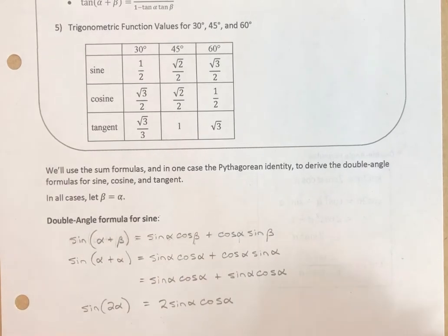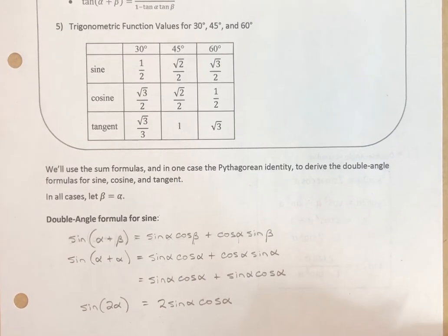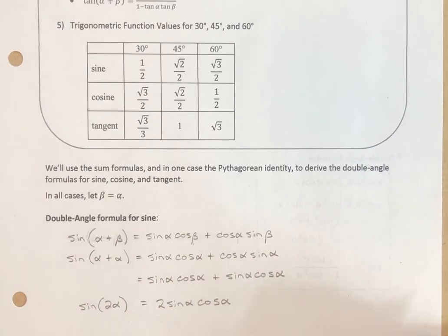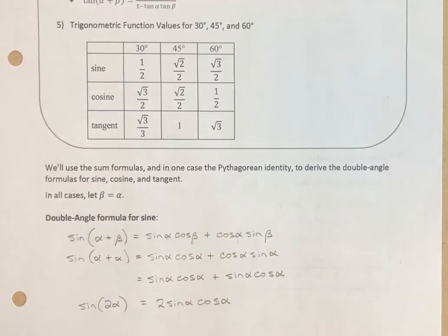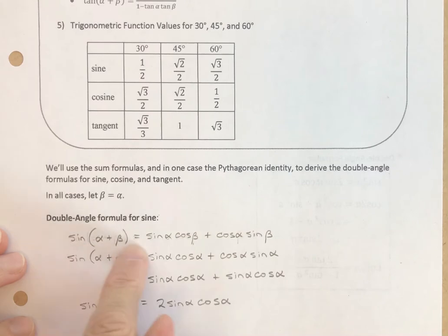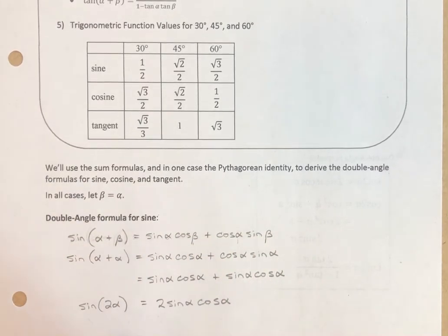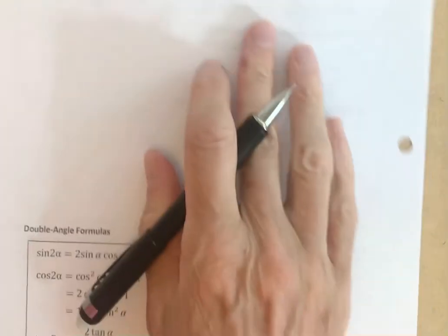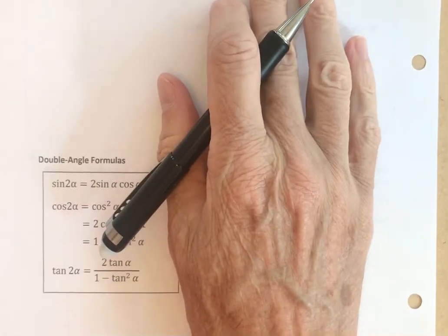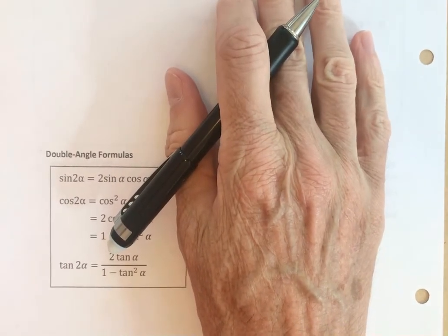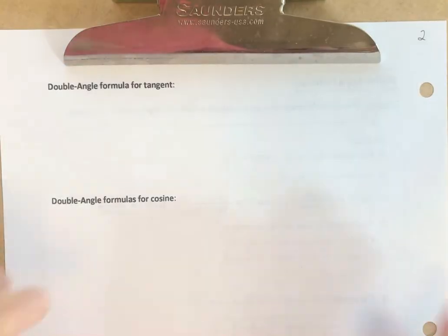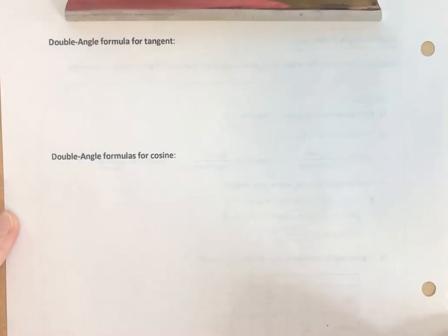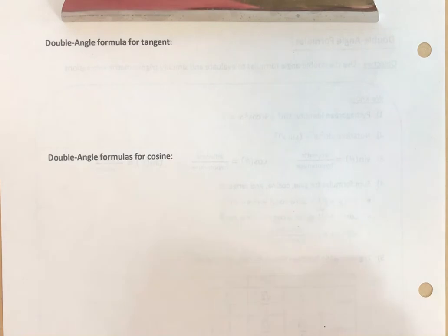There you have it — we have derived the double angle formula for sine. Next up is tangent because it's a little bit easier than cosine, so we'll go from simpler to more difficult.